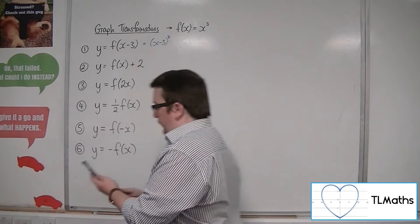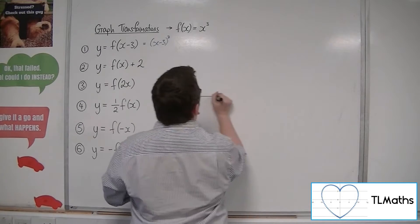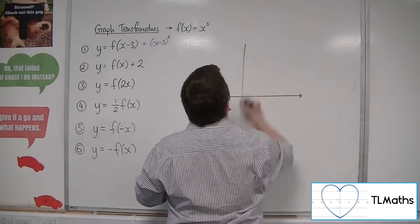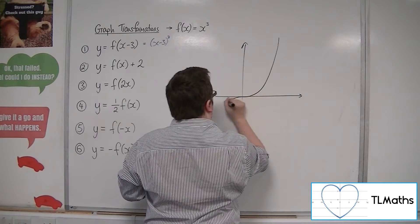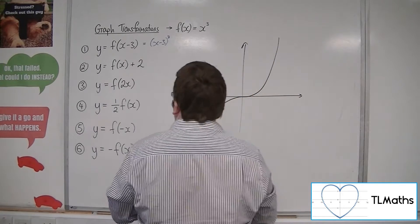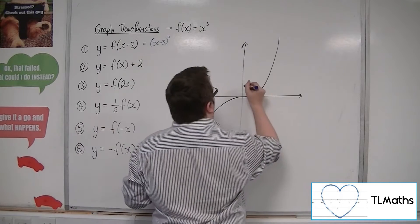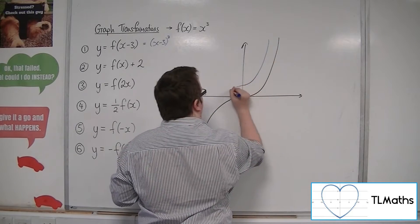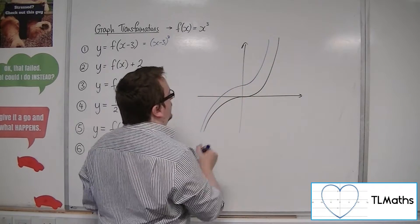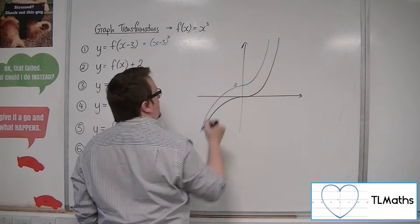So, f of x plus 2. There's x cubed. f of x plus 2 would be 2 units up. Like so. So there would be 2.